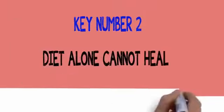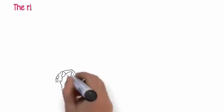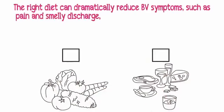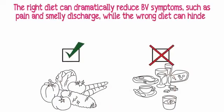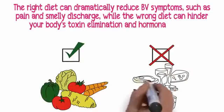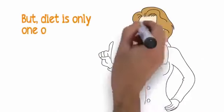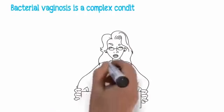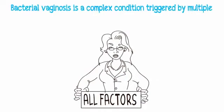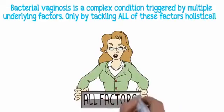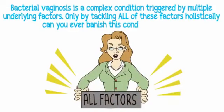Key number two: diet alone cannot heal bacterial vaginosis. The right diet can dramatically reduce BV symptoms, while the wrong diet can seriously aggravate your condition. But diet is only one of the factors involved. Bacterial vaginosis is a complex condition triggered by multiple underlying factors. Only by tackling all of these factors holistically can you ever banish this condition for good.